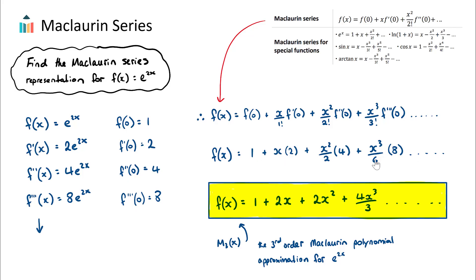So if I'm just going to take these four terms here, I can say that f of x is equal to 1 plus 2x plus 2x squared, after I simplify the 4 and the 2, and likewise here, 4x cubed over 3.